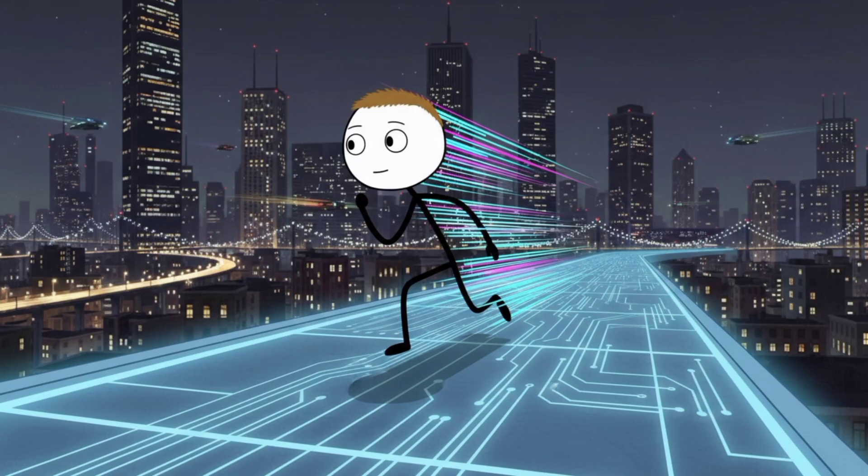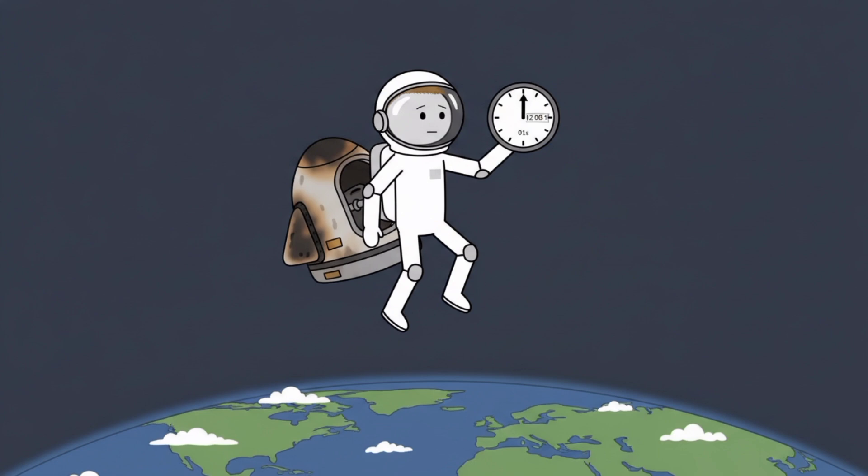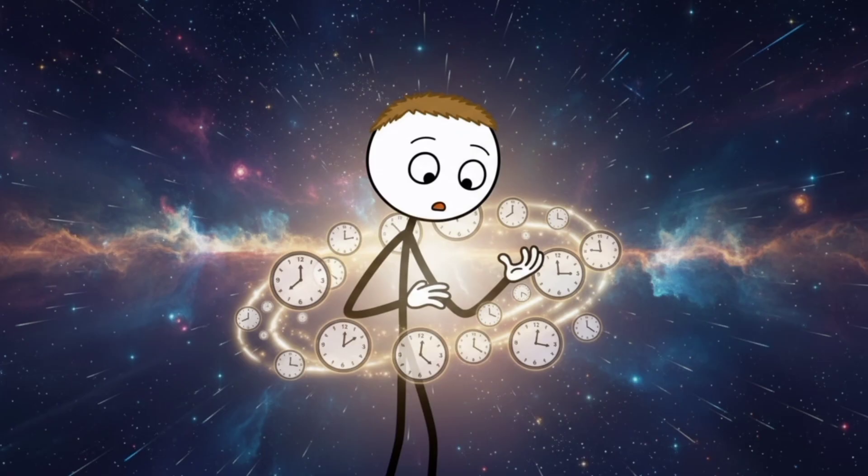Want to age slower than everyone else? Just keep moving fast. Astronauts come back from space missions microseconds younger than they should be. It's the worst superpower ever, but it's real.